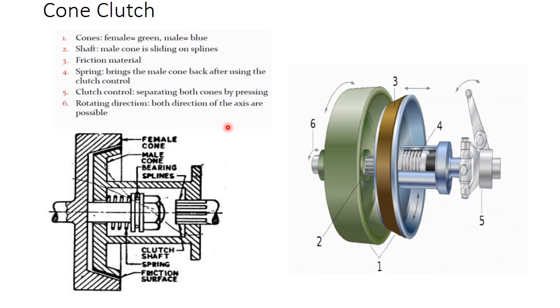The frictional lining material is deposited on the male cone. The fourth one is the spring that can push forward and backward to the male cone. Clutch control separates both cones by pressing. Rotating direction - both directions of the axis are possible: clockwise and anti-clockwise.